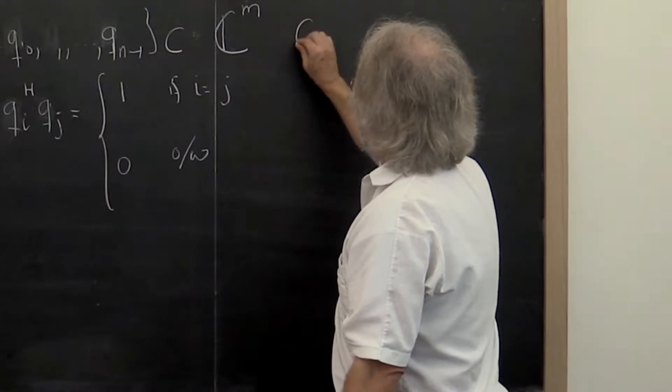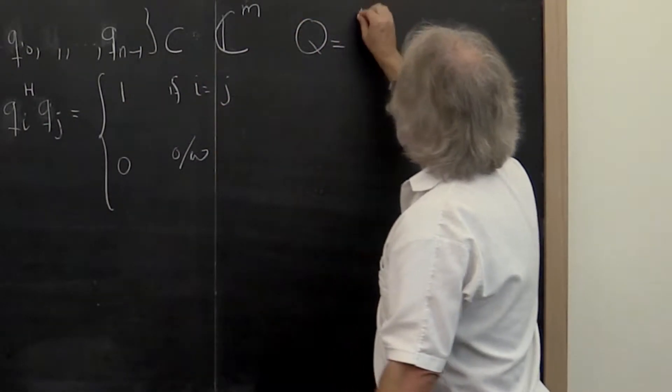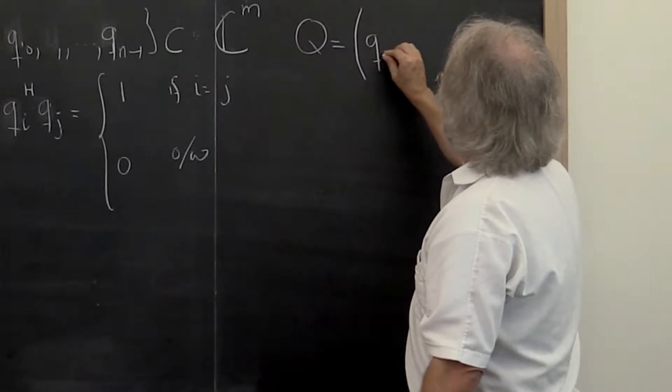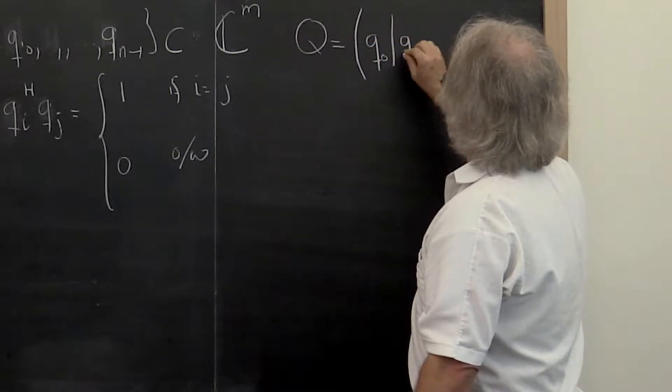Now let's take those vectors and let's make them the columns of a matrix.